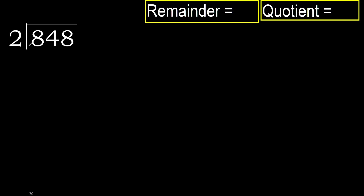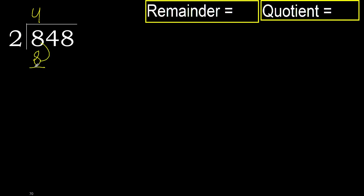848 divided by 2. 8 is not less, therefore start with 8. 2 multiplied by which number is nearest to 8 but not greater? 2 multiplied by 5 is 10, 10 is greater. Multiplied by 4 is 8, is not greater, ok. Subtract 8 minus 8 equals 0. Next.